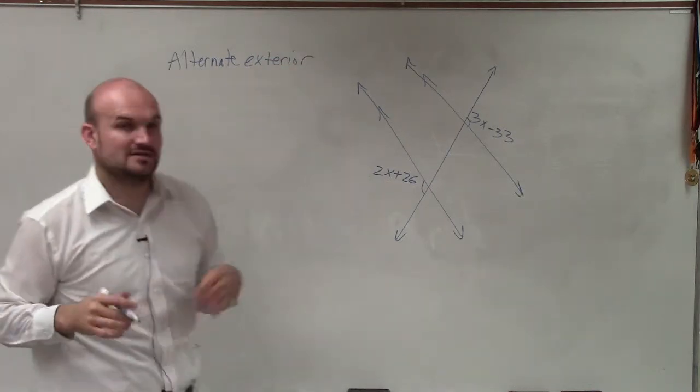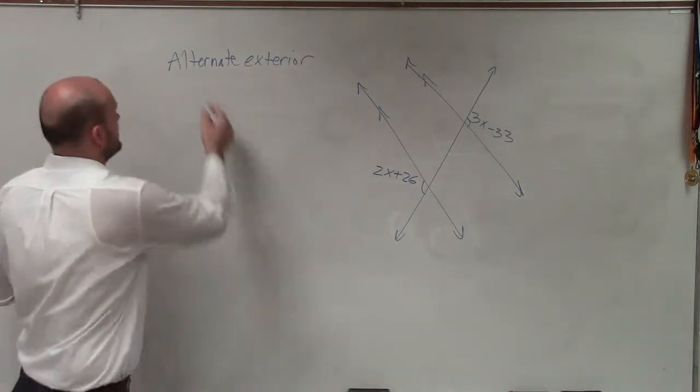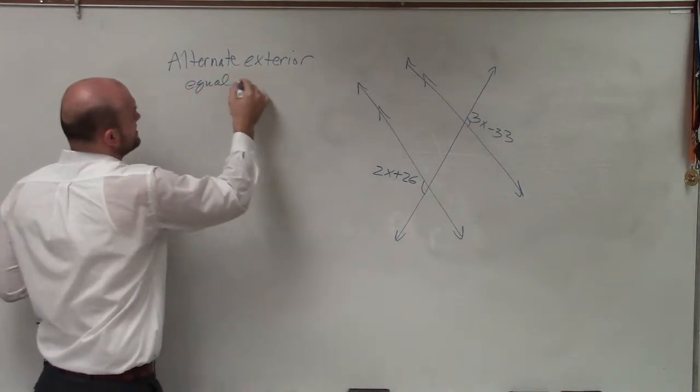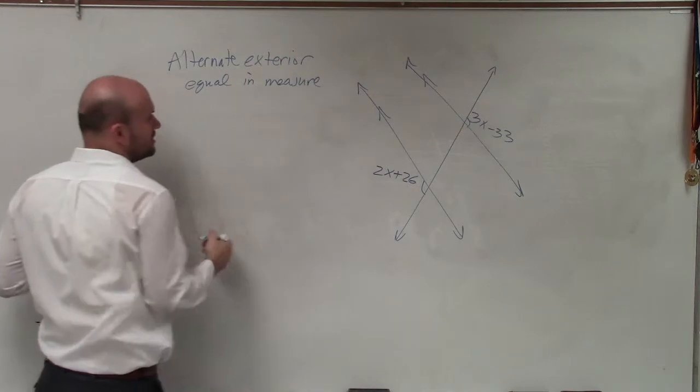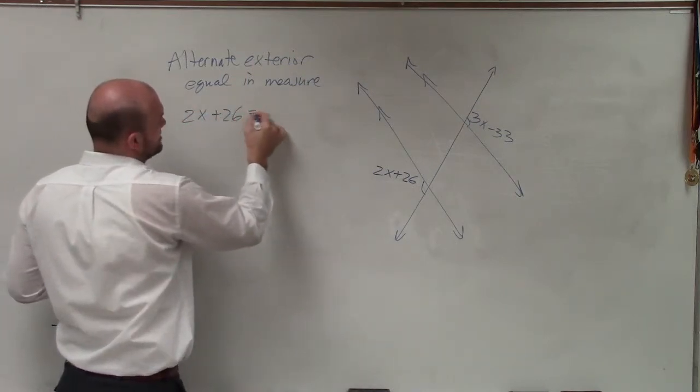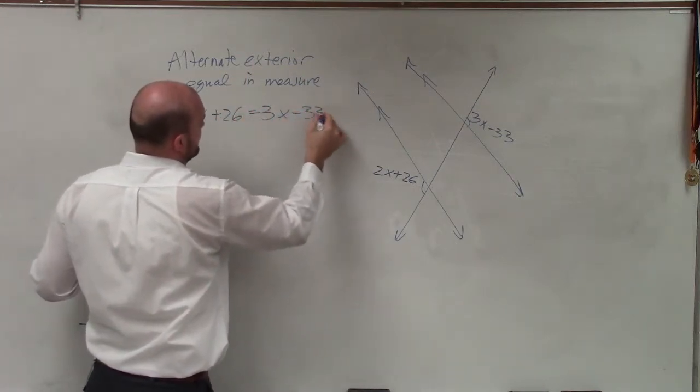Okay, so alternate exterior angles are equal in measure. Since I know they're equal in measure, now I can create an equation to solve them. So I can say 2x plus 26 equals 3x minus 33.